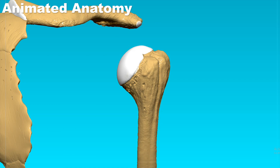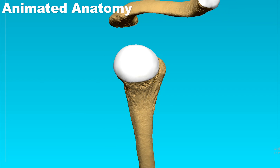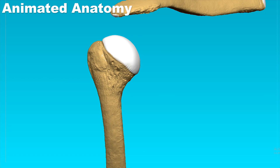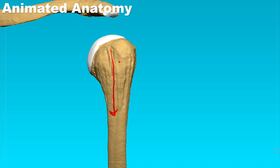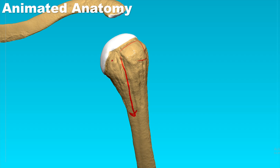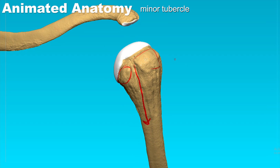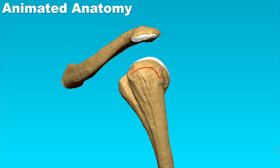If you remove the surrounding structures and look at this bone from the medial point of view, you will notice that it's pretty much cylindrical. This here is the intertubercular groove — and why is it intertubercular? Because you have the major tubercle and the minor tubercle. The minor tubercle is forward and the major tubercle is more posterior.